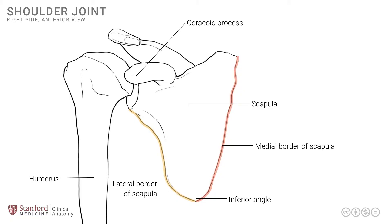There is a second projection, much larger than the first, known as the acromion process. The acromion process is a rectangular piece of bone that is the highest point of the scapula, or the highest point of the shoulder region — hence the name acromion. 'Acro' means high, a root word used in other medical terms such as acromegaly, which means excessive height.